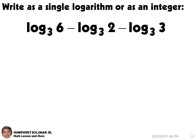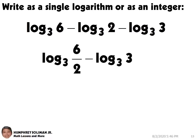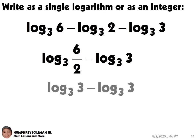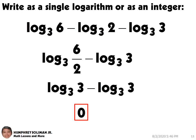Let's try another example: log base 3 of 6, minus log base 3 of 2, minus log base 3 of 3. We can combine the first and second terms into a single logarithm; this becomes log base 3 of 6 over 2. Then, we can simplify log base 3 of 3 minus log base 3 of 3, and this becomes 0.